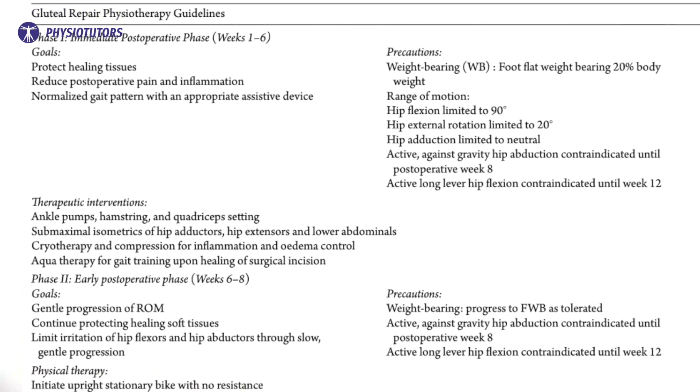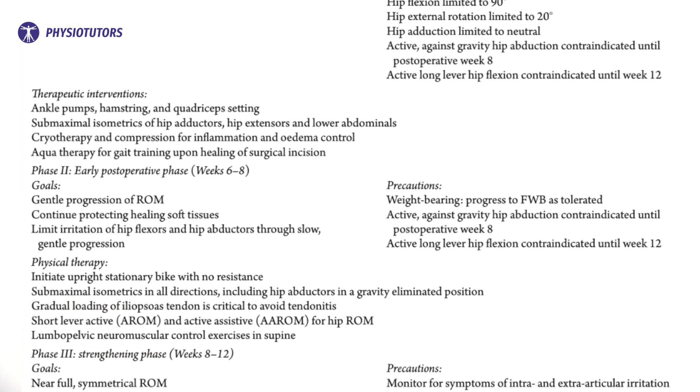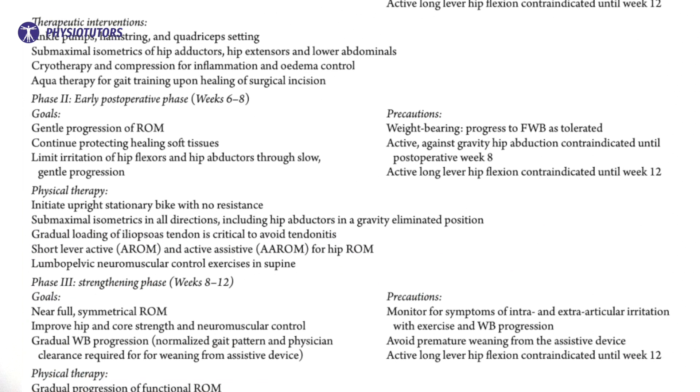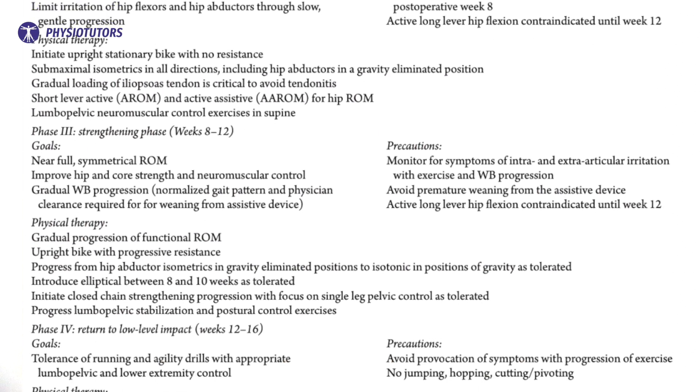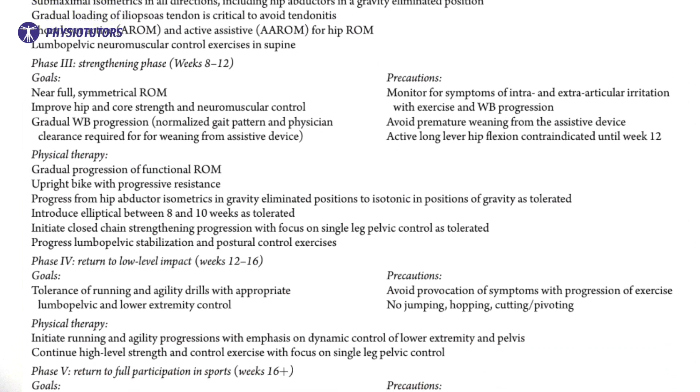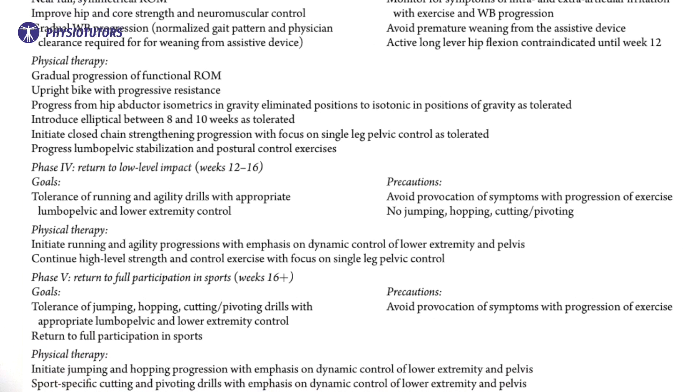Prognostic indicators affecting surgical outcomes include age, BMI, tear size, tissue quality, tobacco use, diabetes, and low physical function. After tendon repair surgery, physiotherapeutic treatment is recommended, although evidence is limited. Many recommendations are based on low-quality evidence, requiring further high-quality research to confirm or reject them.